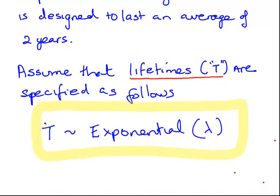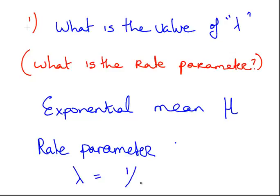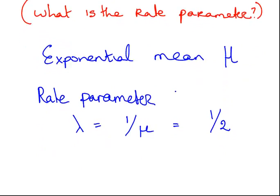We will specify it as follows: T is distributed according to the exponential distribution with a rate parameter lambda. This is what we are interested in first off. So the first question here is, what is the value of lambda? What is the rate parameter? Now this is relating to the exponential mean, which we are going to denote as mu. That's how long we expect our disks to last on average. The rate parameter, lambda, is the inverse of that. So lambda is equal to 1 over mu, and that is 1 over 2. So the rate parameter is 1 half.